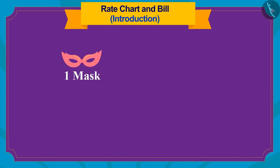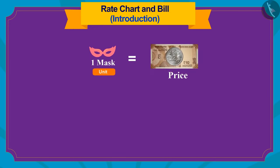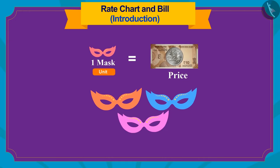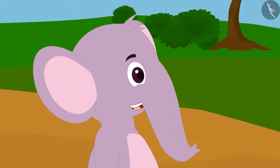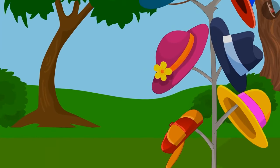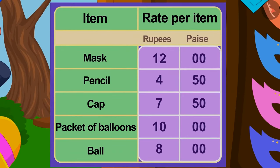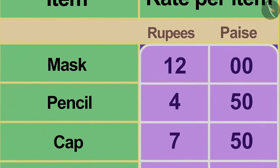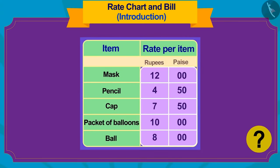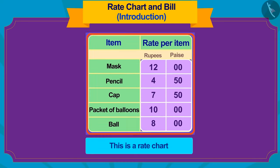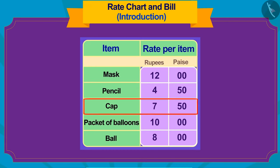Children, if we know the value of a unit of any item, then we use the process of multiplication to find the price of multiple units. Now, Appu saw a beautiful cap on Banni's stall. He saw one such board next to the cap. The price of each item available at Banni's stall was written on the board. This is a rate chart. We can see the price of one piece of each item.